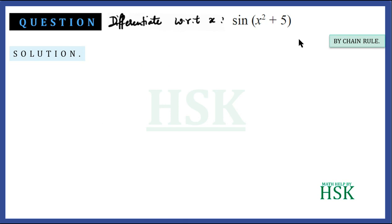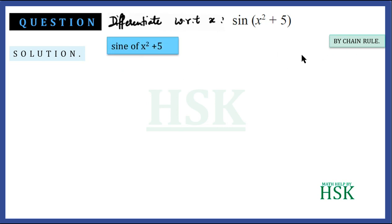The same question can now be solved by the chain rule. In the chain rule, the first step is to read the function. The function is sin(x² + 5), which consists of two parts: the outer function sine, and the inner function x² + 5.